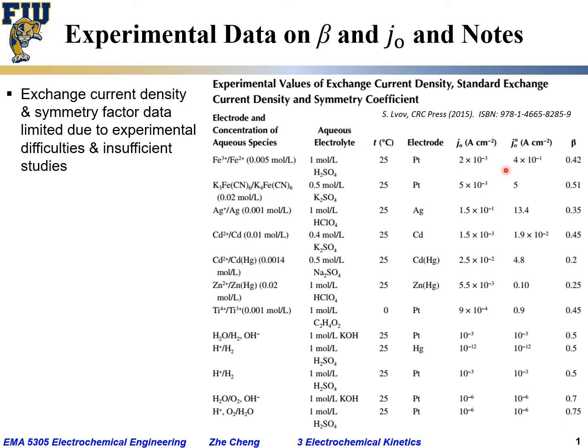You would see that the beta factor is quite often around 0.5, which is what we assume, but some can be greater than 0.5 and some can be smaller than 0.5.